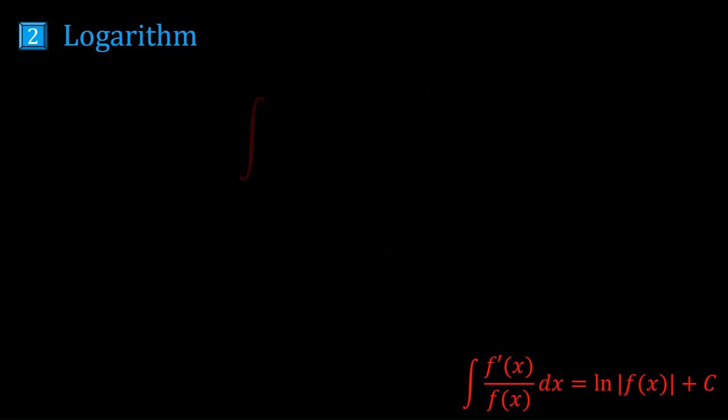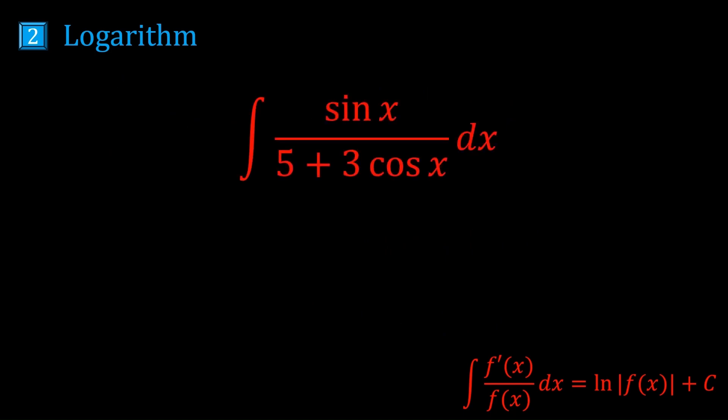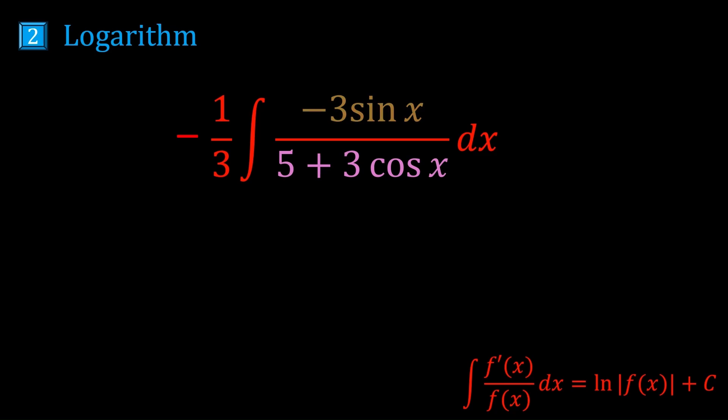Next we have sin x over (5 + 3cos x). The derivative of the denominator is minus 3 sin x. We almost have that at the top, so we multiply and divide by minus 3. Now the numerator is the derivative of the denominator, so the answer is minus 1/3 · ln|5 + 3cos x|.